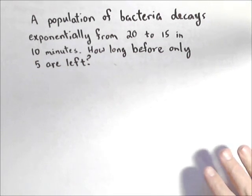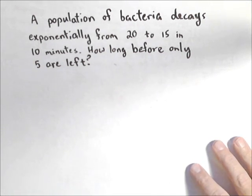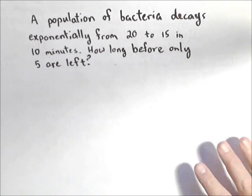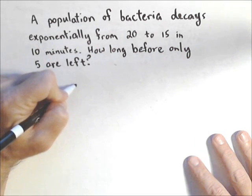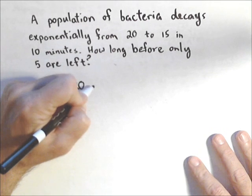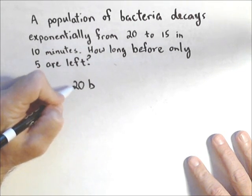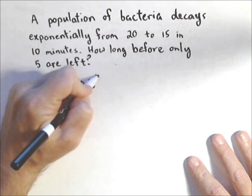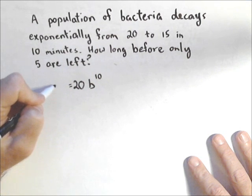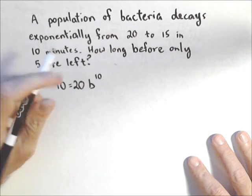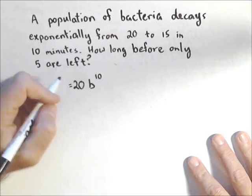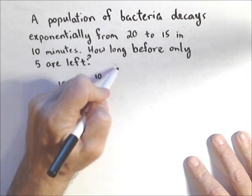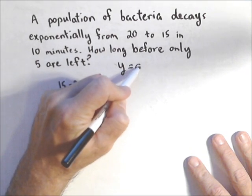Many different approaches to this problem. The biggest thing is we need to build a model, some kind of model to work off of. So I know that if I start off at 20, and I'm gonna call B the base, after 10 minutes, it's gonna have decayed down to 15. For this one, I'm using the model Y equals AB to the T.